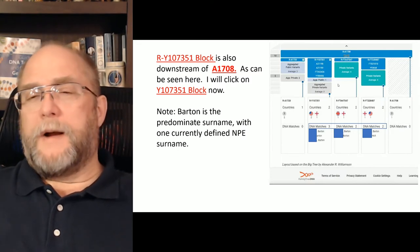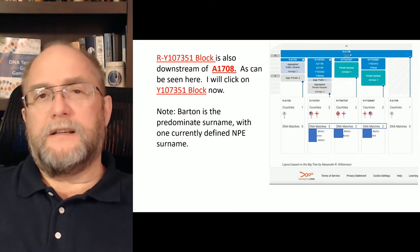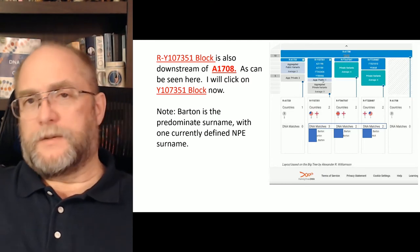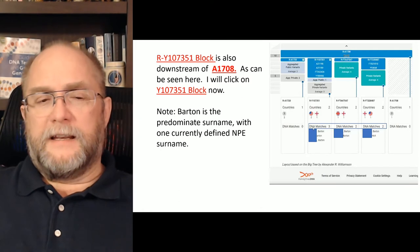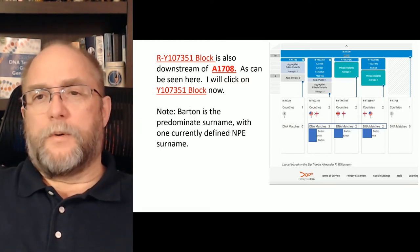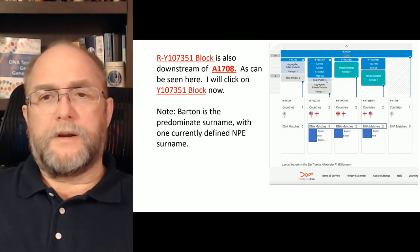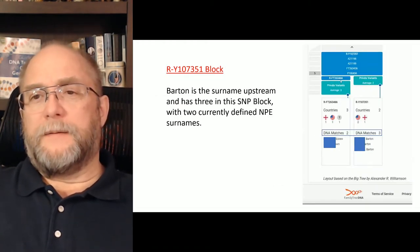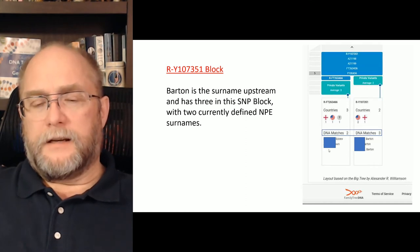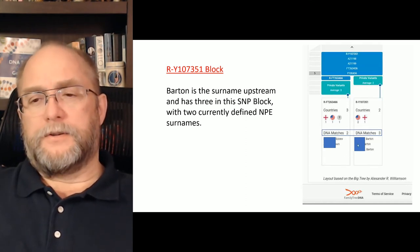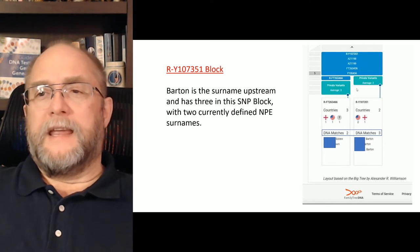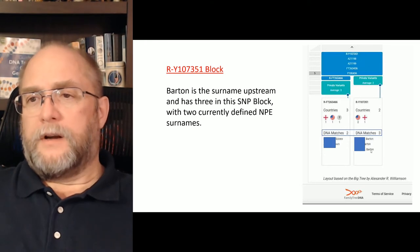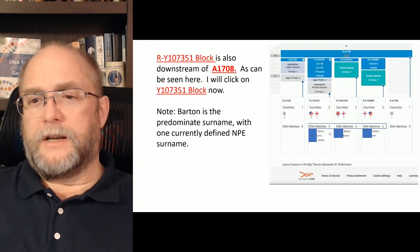Going back to A1708, there's another entry with a gray block, meaning there are people underneath it. Again the predominant name is Barton, so we go underneath this one as well. We see a block defined by a SNP that has a couple of NPE names understood to be NPEs, and then again Barton — showing up as Barton here, and upstream was also Barton.